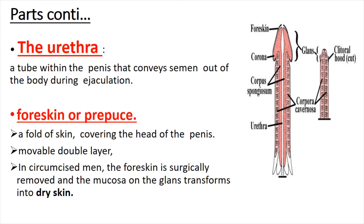After the glans there is the foreskin. The foreskin is a fold of skin covering the head of the penis. It is a movable double layer. In a circumcised man, the foreskin is surgically removed — also called the prepuce — and the mucosa of the glans transforms into dry skin. Most Muslim people perform circumcision, believing that dry skin helps prevent diseases related to the penis.